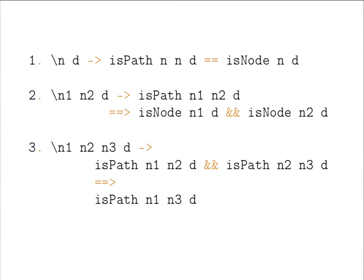The three properties are: (1) there is a path from a node to itself if and only if that node is in the graph, because you can stay there — an empty path; (2) if there is a path between two nodes, both nodes must be in the graph; (3) transitivity — a path between nodes 1 and 2, and between 2 and 3, implies a path between 1 and 3.